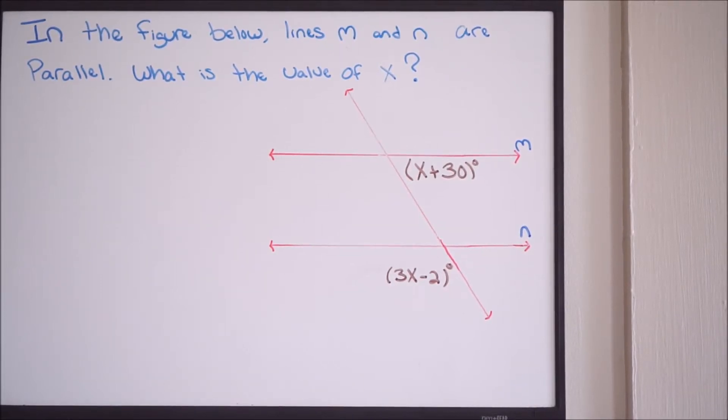Alright guys, in this particular problem we are dealing with a geometry problem and we're asked to find the missing value of x. So it says in the figure below the lines m and n are parallel, what is the value of x?